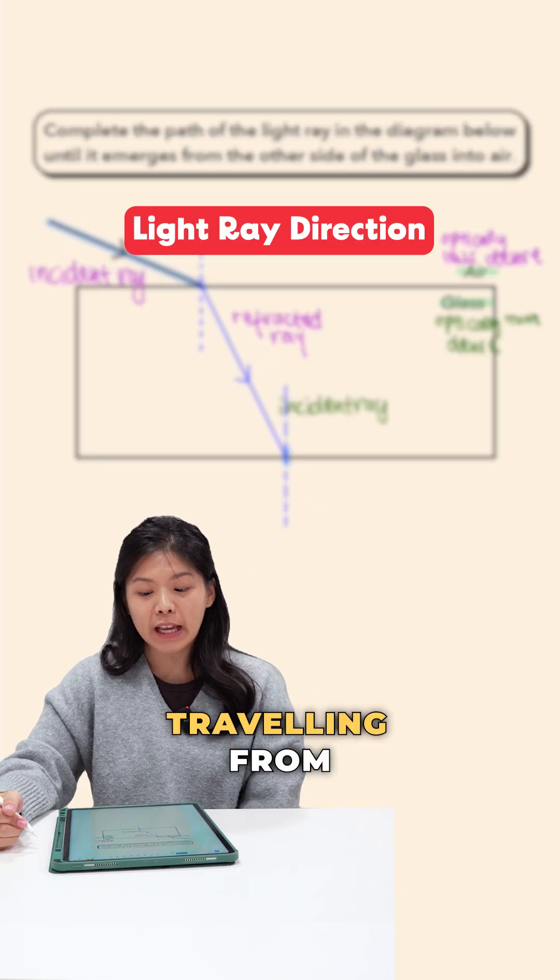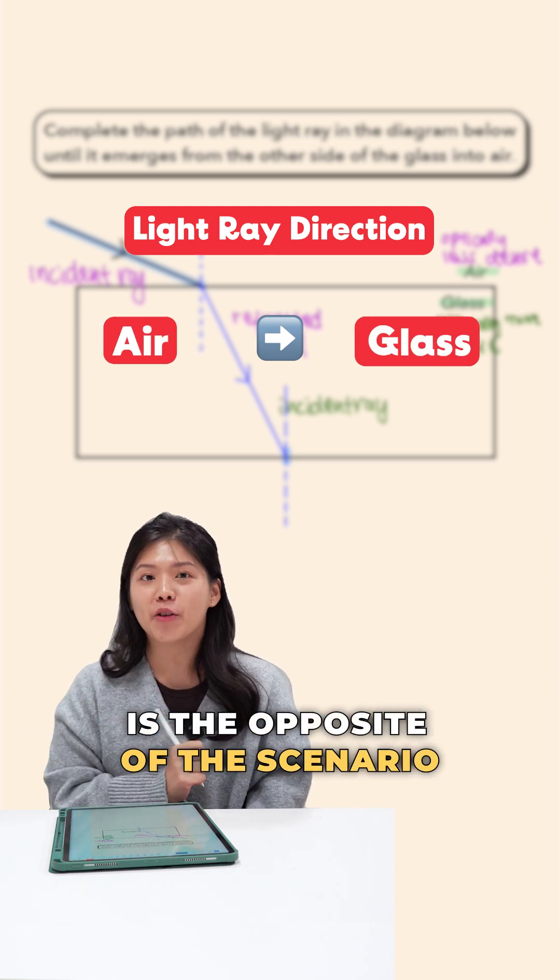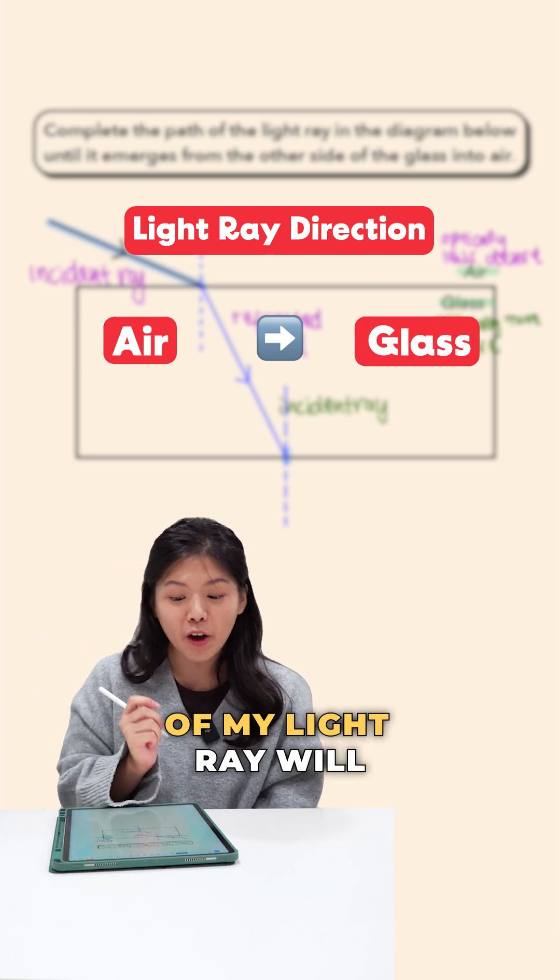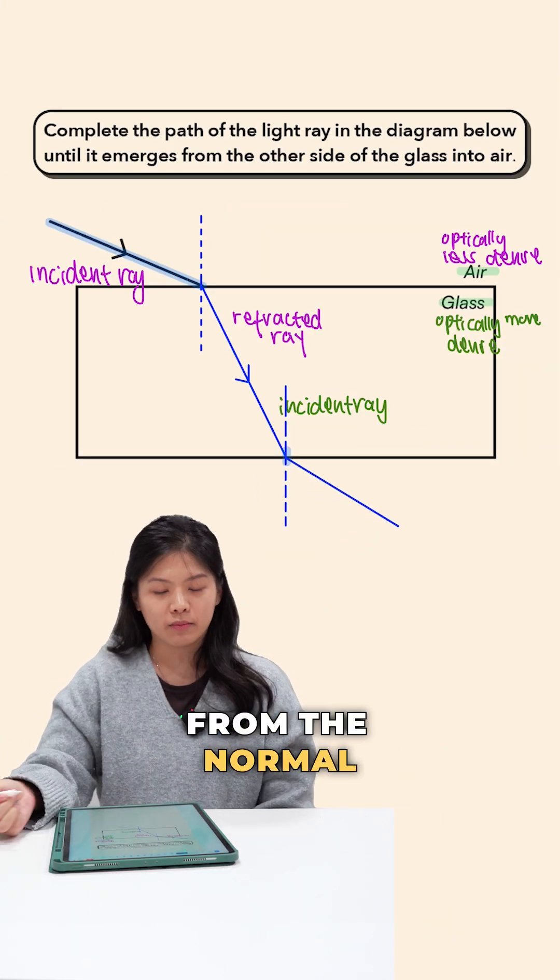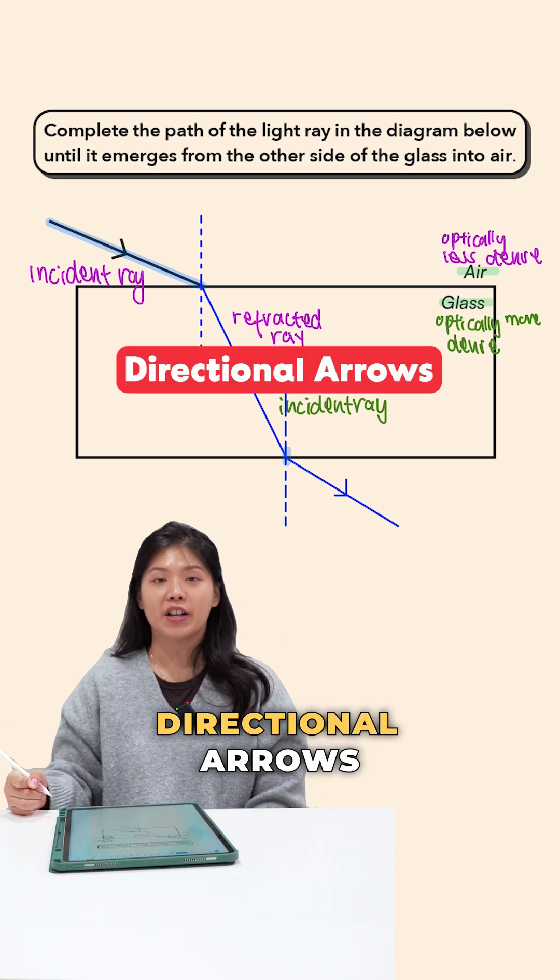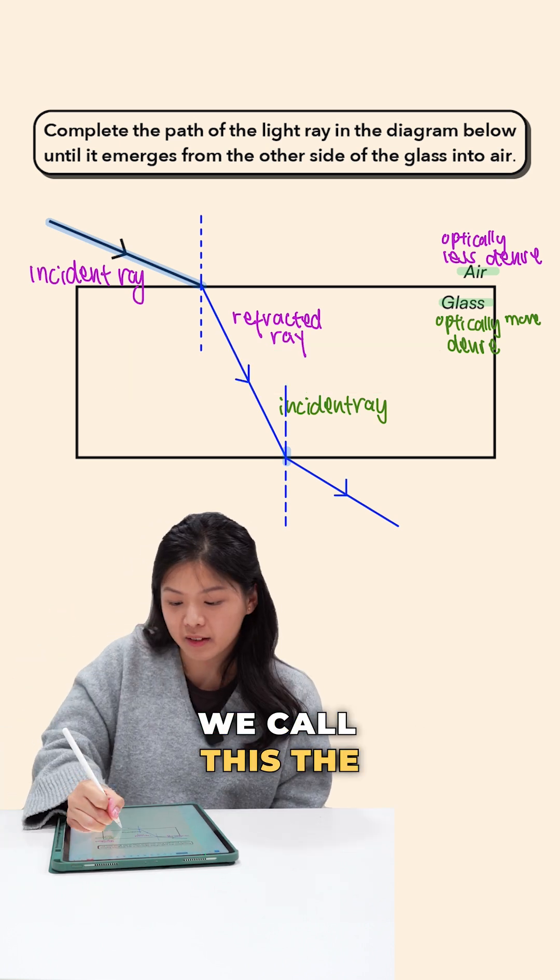So now my light ray is traveling from glass back out to air. Do you notice that the direction of light ray is the opposite of the scenario from earlier? This means that the behavior of my light ray will also be the opposite. Instead of my light ray traveling straight like this, it will bend away from the normal. Once again, don't forget to draw your directional arrows. And because this is the light ray that has been refracted, we call this the refracted ray.